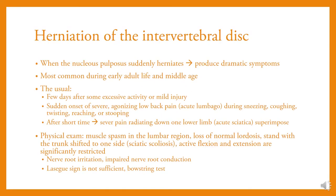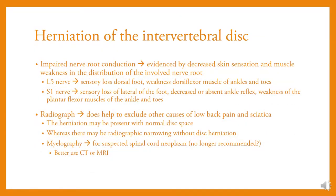Herniation of the intervertebral disc: when the nucleus pulposus suddenly herniates, it produces dramatic symptoms, most common during early adult life and middle age. Onset typically occurs a few days after excessive activity or mild injury — sudden severe agonizing low back pain during sneezing, coughing, twisting, reaching, or stooping. After a short time, severe pain radiates down one lower limb. Physical examination shows muscle spasm in the lumbar region, loss of normal lordosis, trunk shifted to one side, and significantly restricted active flexion and extension. Impaired nerve root conduction causes decreased skin sensation and muscle weakness in the distribution of the involved nerve root.